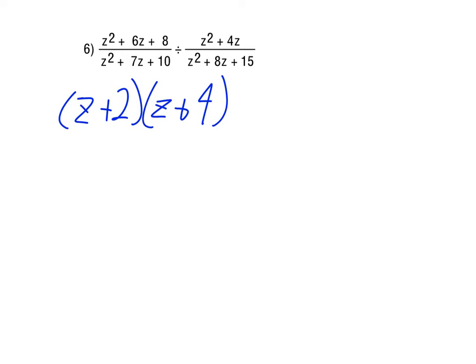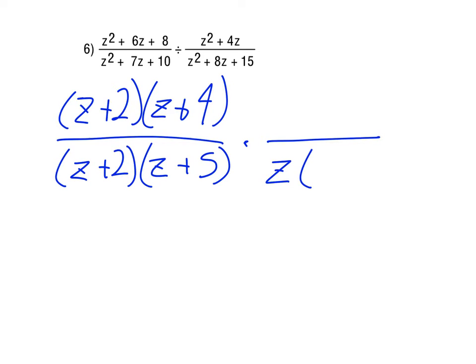And then z plus 2 again, and z plus 5. So again, flipping and factoring that, the z squared plus 4z will end up on the bottom, so we can take a z out of that. And then we end up with z plus 4. z squared plus 8z plus 15 is z plus 5, and z plus 3.